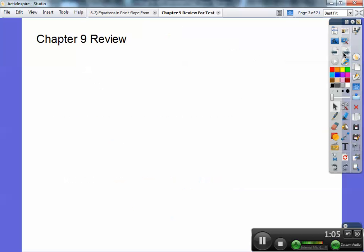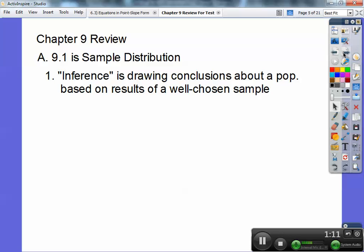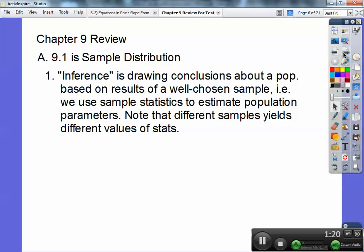All right, so here's chapter nine review. It's a quick review. 9.1 is on sampling distribution. So inference is drawing conclusions about a population. We take simple random samples to do that, based on the result of a well-chosen sample. We use sample statistics to estimate population parameters. Note that different samples yield different values of statistics. That's what's called sampling variability.